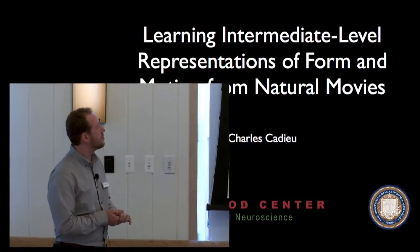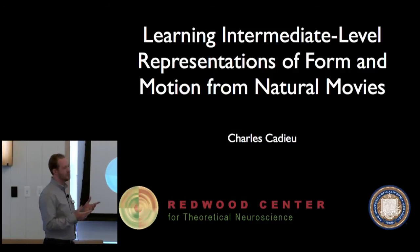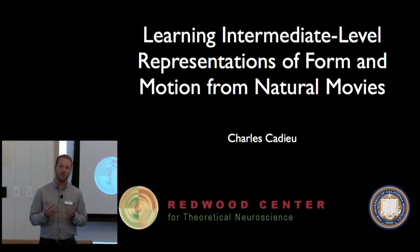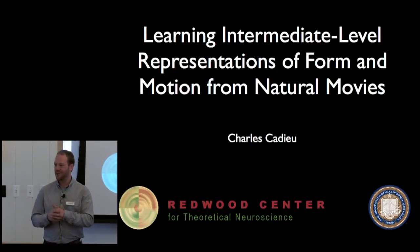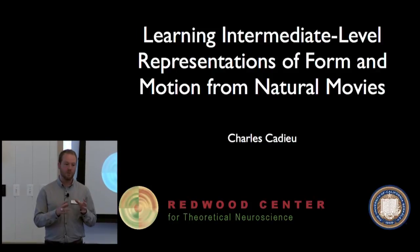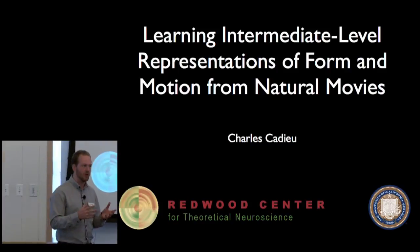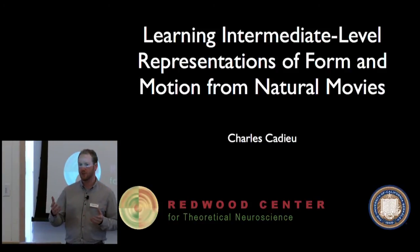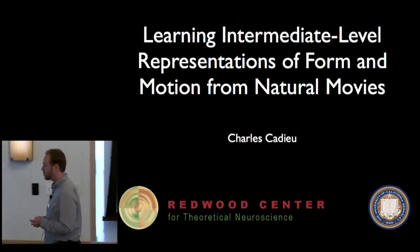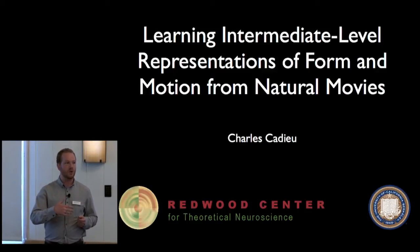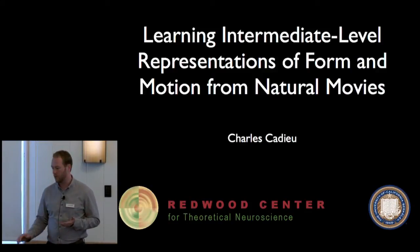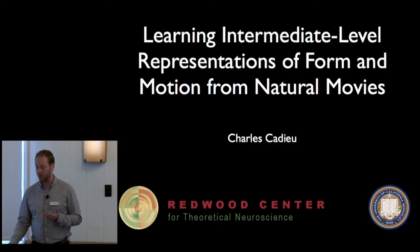Today I'll be talking about learning intermediate level representations of form and motion from natural scenes, from natural movies. While the title of the workshop has to do with high level representations, I think intermediate representations are a big missing component in how we will understand higher level visual areas. There's a big gap in our understanding, as evidenced by a lot of the work we've already heard today. I'll try to move you towards some of the work we've been doing that tries to elucidate and maybe provide predictions about what these intermediate level representations might look like.